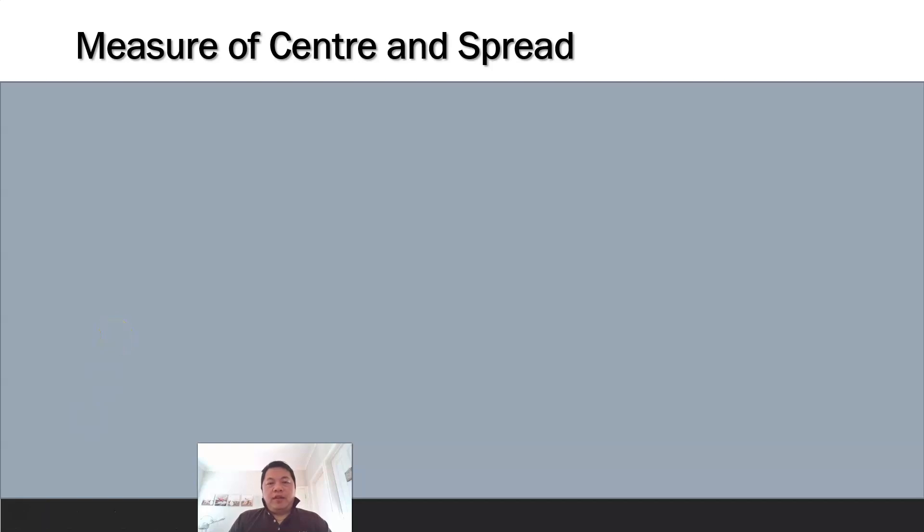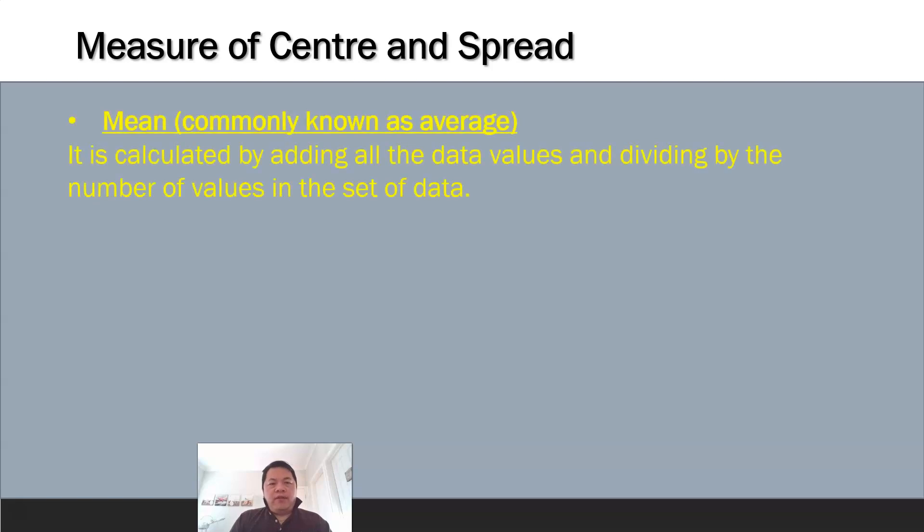Most of us have learned this before. There are actually three modes to measure, but most of the time in real life we say we find the average. But average is not necessarily the best way to measure the center. The average, known as mean in statistics, is calculated by adding all the data and then dividing by the number of values in the set of data.